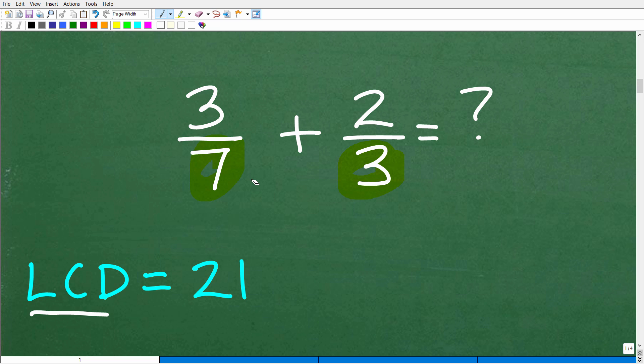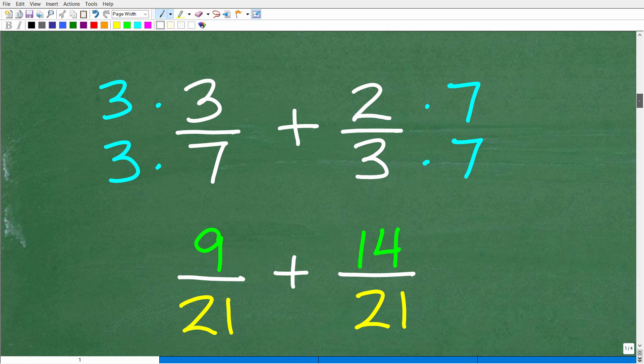How you find the LCD is a whole separate topic, but let's continue. What do we do with the LCD? We need to rewrite these fractions such that the denominators both have 21. How can I turn a 7 into 21? I just multiply it by 3. But if I'm going to multiply 7 by 3, I also have to multiply the numerator by 3. I come up with a new fraction, 9 over 21.